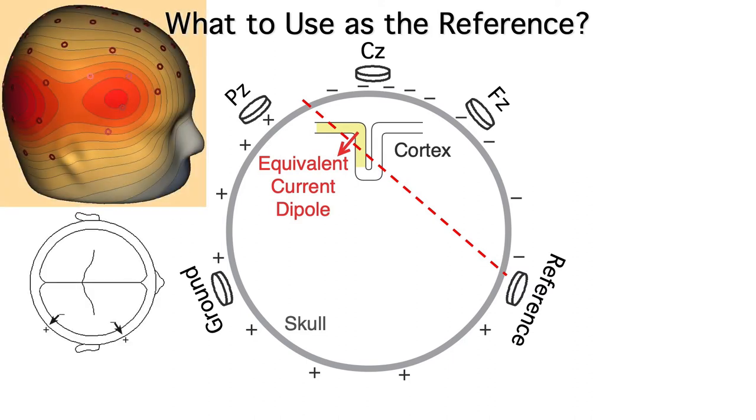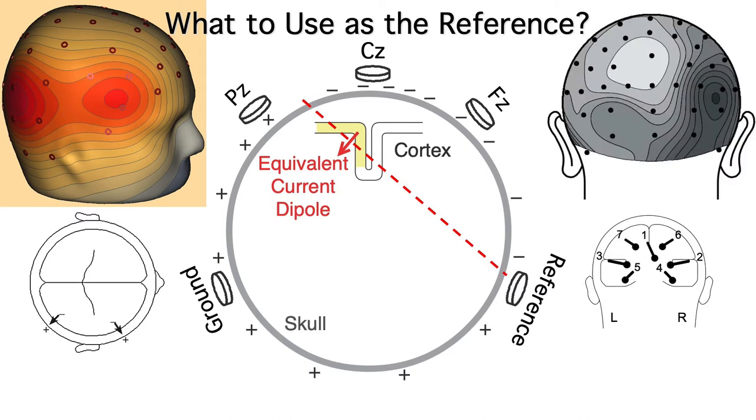If we have two dipoles, there's no single zero line, and we usually have at least a dozen dipoles. So in practice, there's just no way to find an electrically neutral location for the reference electrode.